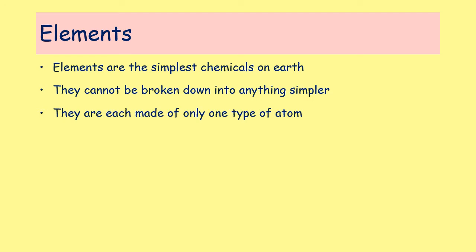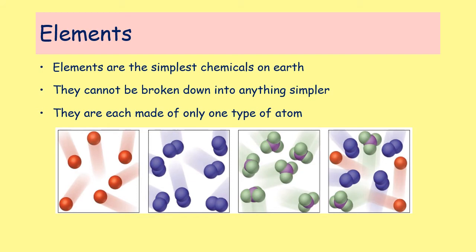What makes an element unique is that it only contains one type of atom — every single atom inside an element is identical. Here we have different diagrams representing elements, where each different color represents a type of atom. In the first diagram, all the atoms are red and the same size, so that makes it an element. In the next diagram, all the atoms are blue and the same size, so they're all the same type of atom — that makes it an element.